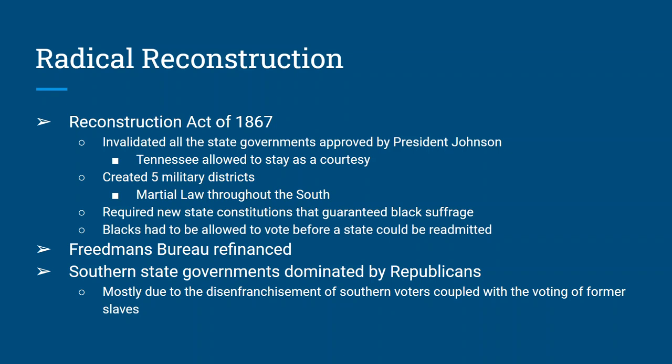Southern states became Republican mainly due to the disenfranchisement of southern voters and the voting rights granted to former slaves. Southern white voters — who would have overwhelmingly voted Democrat — could not vote, while former slaves voted for the party of Lincoln. African Americans voted Republican all the way up until around World War II, when that started to change.